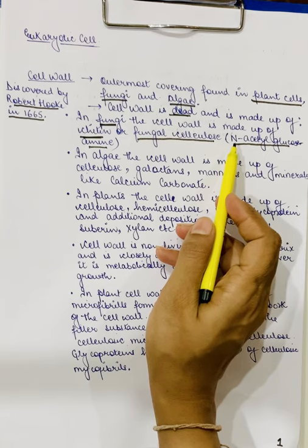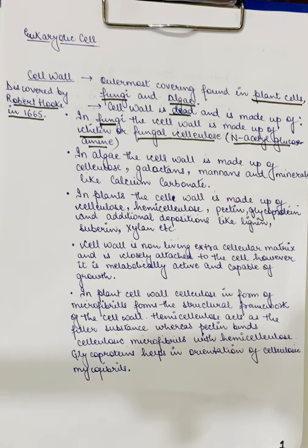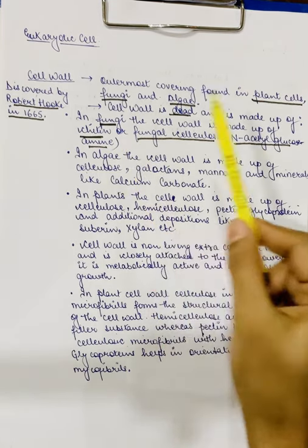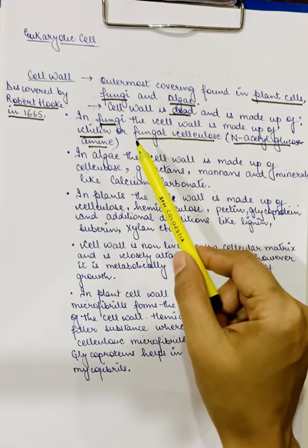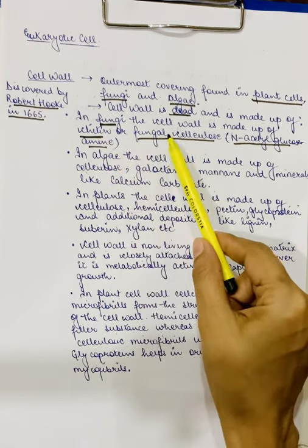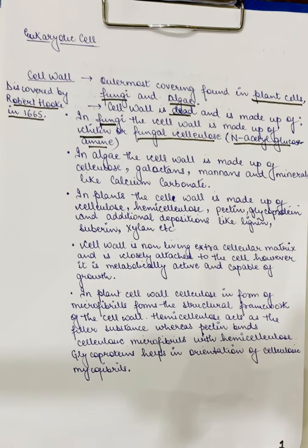We have studied this N-acetyl glucosamine in the cell wall of bacteria also. The prokaryotic cell wall is made up of peptidoglycan, and peptidoglycan is made up of chains of N-acetyl glucosamine which are cross-linked by short peptide chains. So, this N-acetyl glucosamine is present in the cell wall of fungi and it is even present in the cell wall of bacteria. Fungal cell wall is made up of chitin or fungal cellulose.